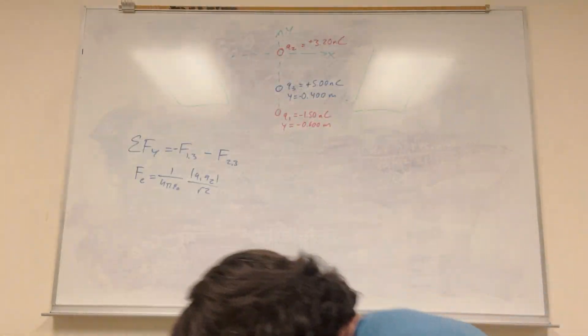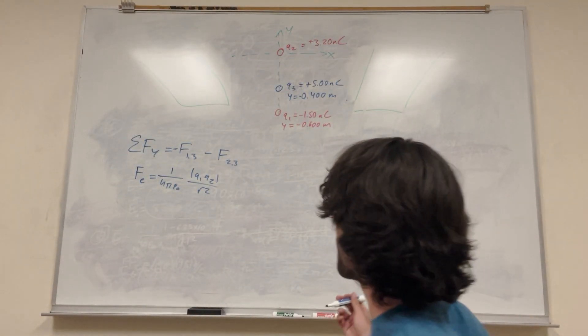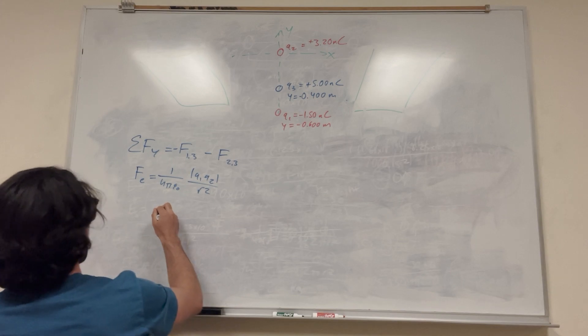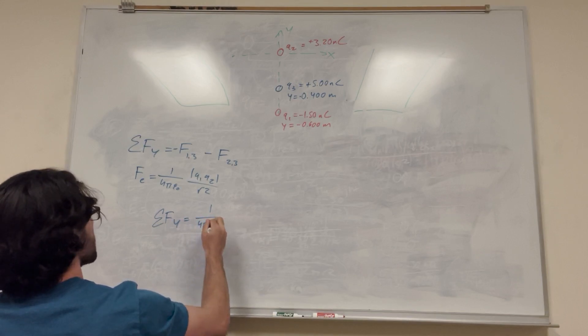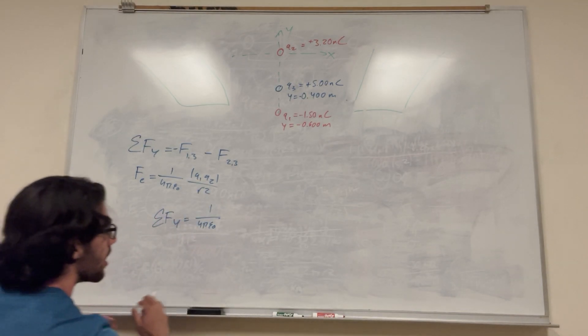So all we need to do is plug this in for what we know. Sum of the forces in the y direction is equal to force 1 on 3. So it's going to be 1 over 4π epsilon naught.